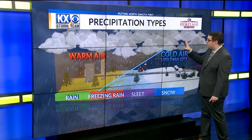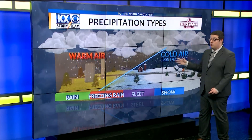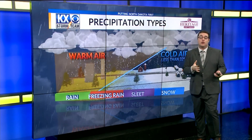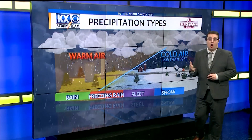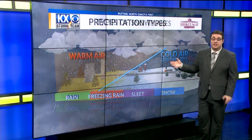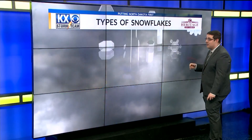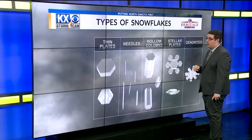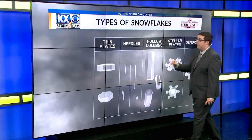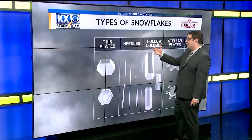When we get an atmospheric layer that's all below that 32-degree mark, that's where we see snow form — and that's what we see here in North Dakota all across the winter. There are different types of snowflakes when it comes to snowfall: we have thin plates, needles, hollow columns, stellar plates, and dendrites.